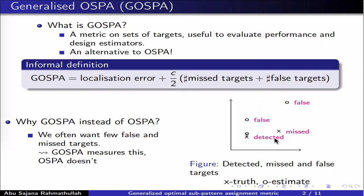In our small example, this means that we have a localization error due to the detected target down here, plus c over 2 times 3, since there are 3 missed and false targets in total. Note that we consider the target here to be missed if the distances to these two estimates are sufficiently large. One of the key differences is that we typically want few false and missed targets, and GASPA specifically measures this, whereas OSPA doesn't.